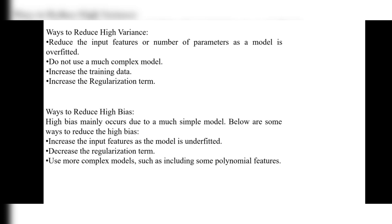To reduce high variance: first, reduce the input features or number of parameters. Since the model is overfitted due to a large number of inputs, use only fewer input features. Do not use a much complex model — divide it into simpler parts to get a better solution. Also, increase the training data, which will give some accuracy for the test data.